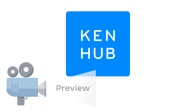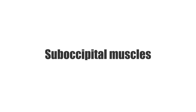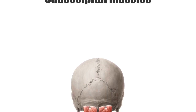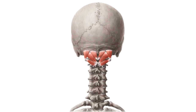Hello everyone, this is Juan from Kenhub and welcome to another anatomy tutorial where this time we're going to be talking about a group of four muscles known as the suboccipital muscles. We're looking at a posterior view of the neck and head. The suboccipital muscles are located just below the occipital bone, hence the name suboccipital muscles.